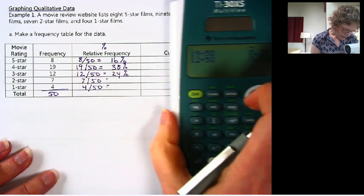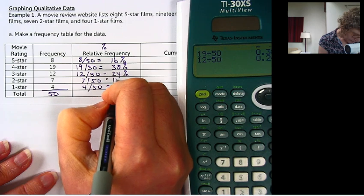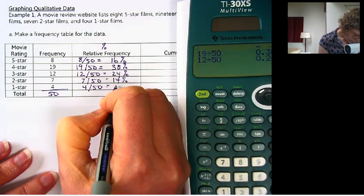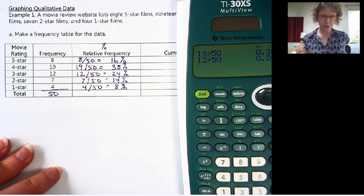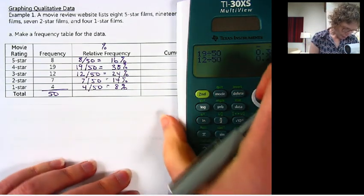So this should be 14. And this should be 8%, because 4 out of 50 is equal to 8 out of 100. Kind of a cool pattern there.